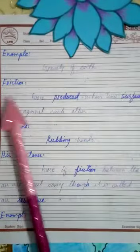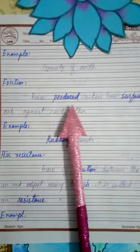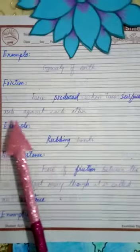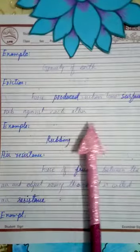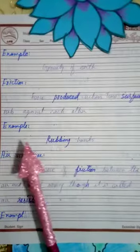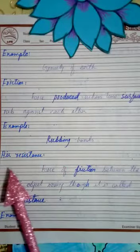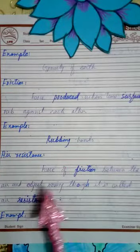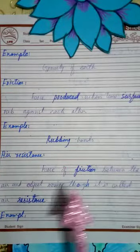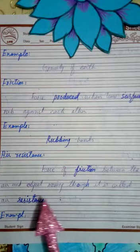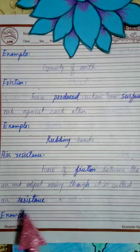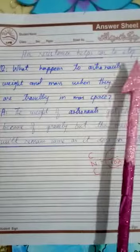Next is friction: force produced when two surfaces rub against each other. Example: rubbing hands. Next is air resistance: force of friction between the air and an object moving through it, is called air resistance. Example: air resistance helps a car to stop.